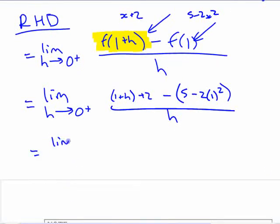This ends up being quite simple after you do all this. What do we have here? 3 plus h minus 5 plus 2 over h.